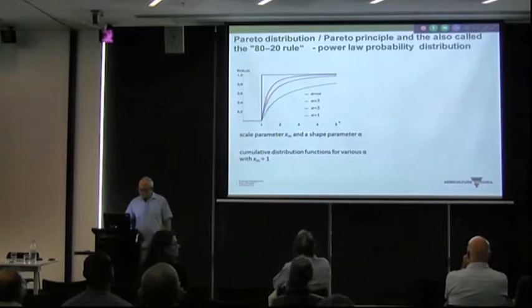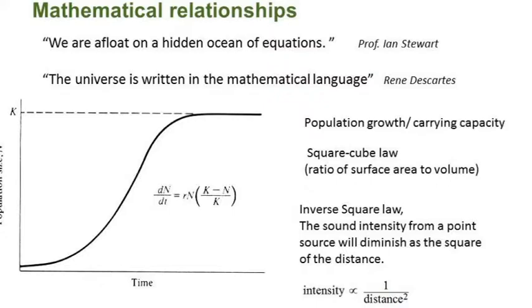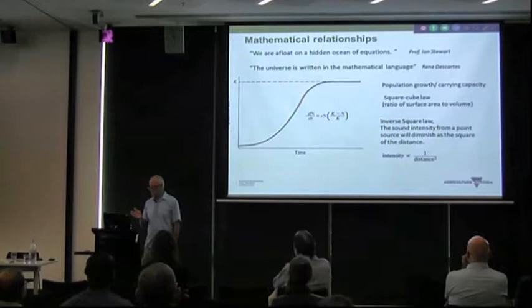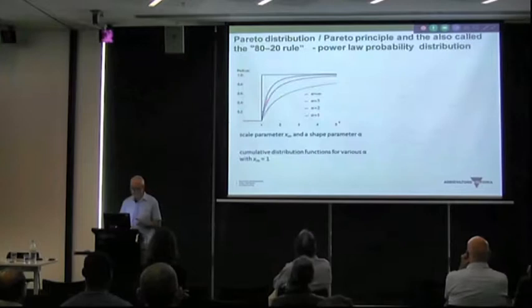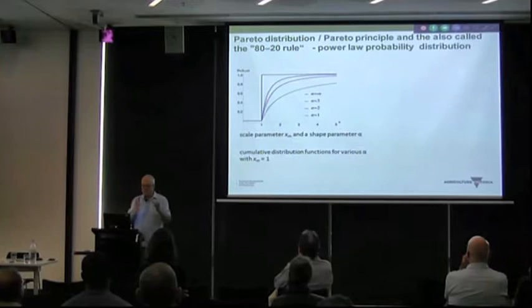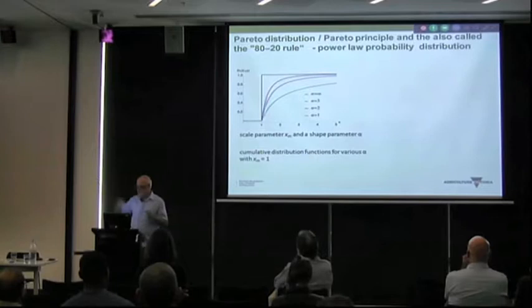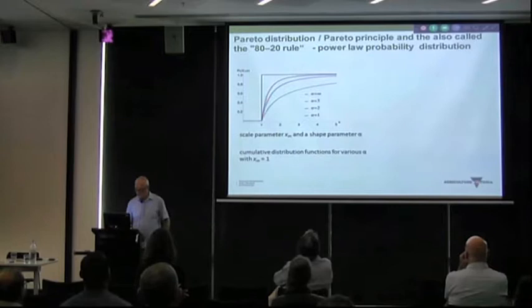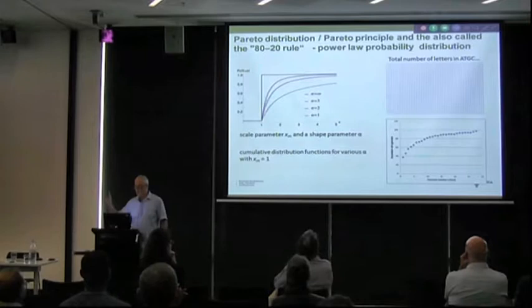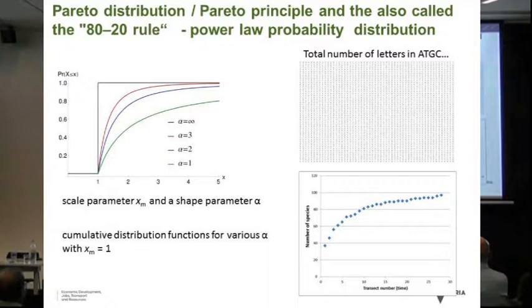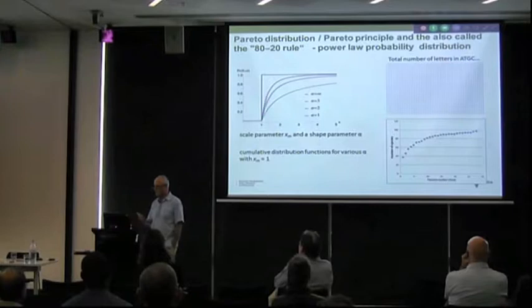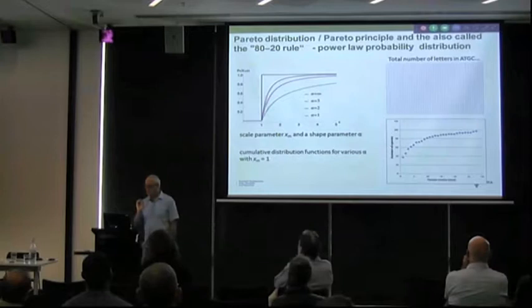Has anybody heard of the Pareto distribution, the law of diminishing returns, or the 80/20 rule? They're all a Pareto distribution or a power law. It basically means you have a law of diminishing returns — you get your biggest bang for your buck early on, then you get decreasing returns on the time you spend. This is the relationship that goes with the number of letters we found, and the number of insects or plants found in a quadrat. Because we know that relationship, we can predict or model how many species should be somewhere and how long it would take to find them.